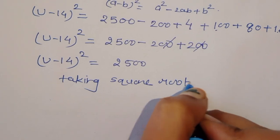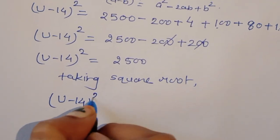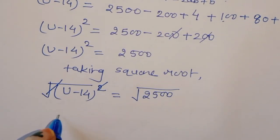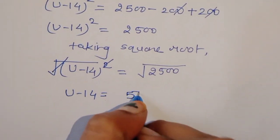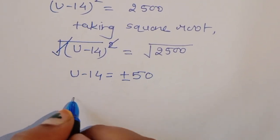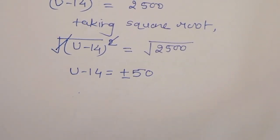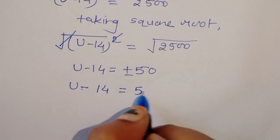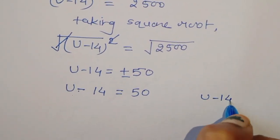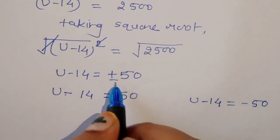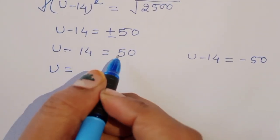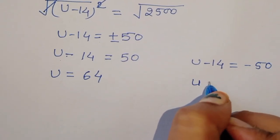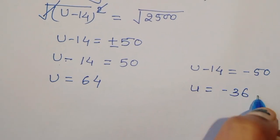Taking square root of both sides: √(u - 14)² = √2500. This gives u - 14 = ±50. So either u - 14 = 50, giving u = 64, or u - 14 = -50, giving u = -36.